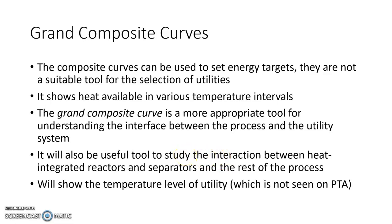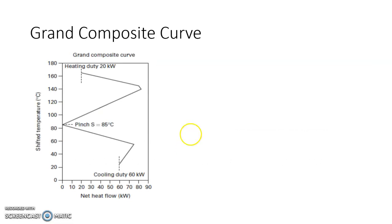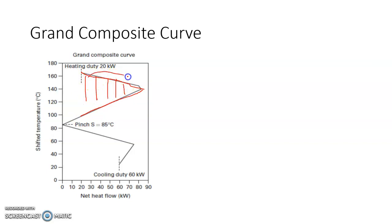The GCC will show the temperature level of the utility, which cannot be seen in Problem Table Analysis. In a typical Grand Composite Curve, this area shows the amount of heat that hot streams can provide, and the cold stream moves in this direction — there is an exchange between hot stream and cold stream. These are called energy recovery pockets, where cold streams receive energy and hot streams give up energy. The remaining portions represent your cooling duty and heating duty. The pinch point is visible on the curve.